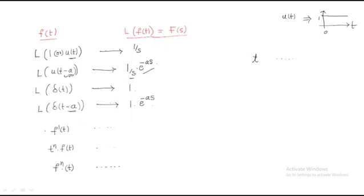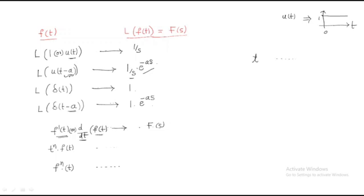Now, f'(t) means df(t)/dt — we are differentiating the function f(t). Whenever differentiation is applied, the Laplace transform gives us: wherever f(t) appears it becomes F(s), and wherever the differential term d/dt appears it becomes s. So L{f'(t)} = L{df(t)/dt} = sF(s). This is a very important formula — the time-domain derivative corresponds to multiplication by s in the s-domain.